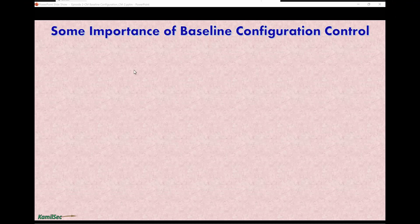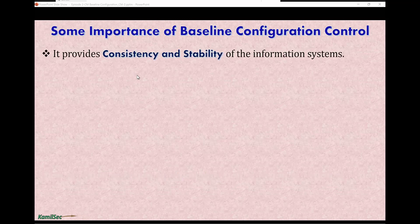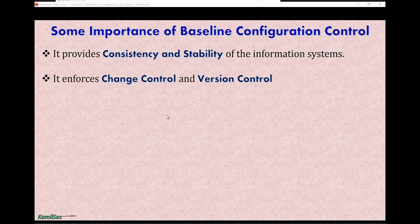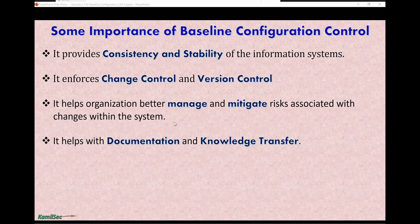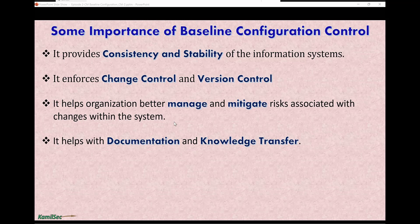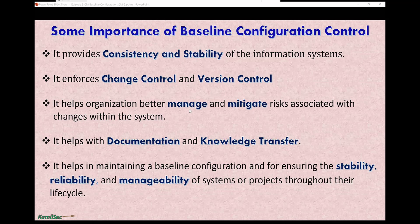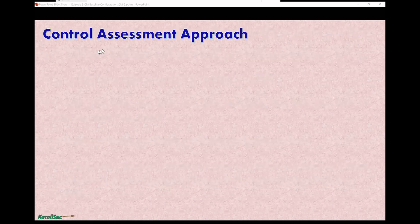Now let's look at some of the importance of baseline configurations. Number one: it provides consistency and stability of the information system. It enforces change control and version control. It helps organizations better manage and mitigate risk associated with changes within the system. It helps with documentation and knowledge transfer — if developers leave your organization, as long as baseline configurations are well documented, the next developer you hire will not have a hard time understanding the codebase. It also helps in maintaining stability, reliability, and manageability of the system throughout its lifecycle.